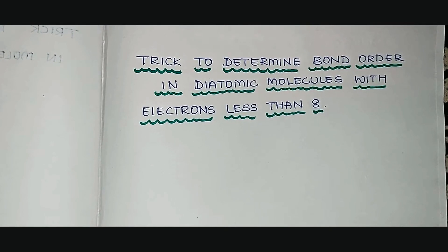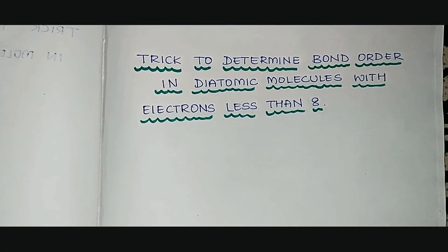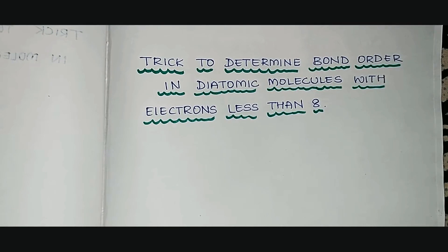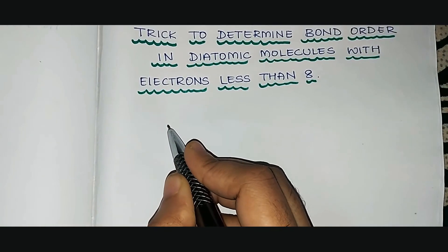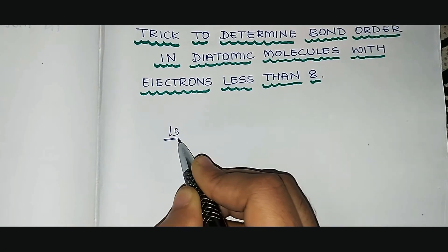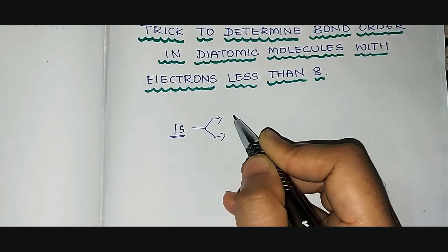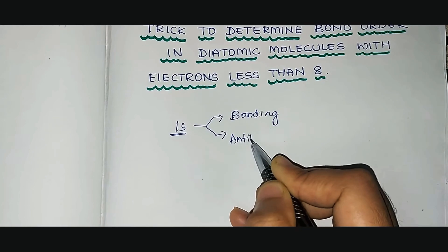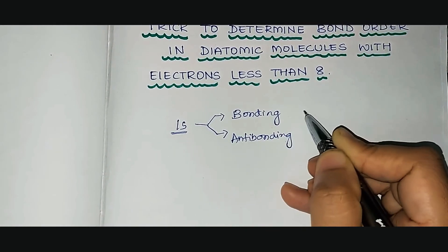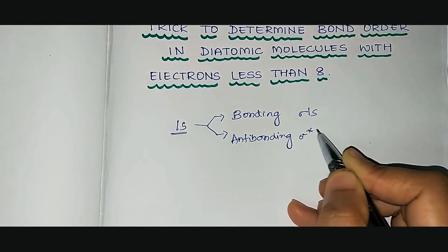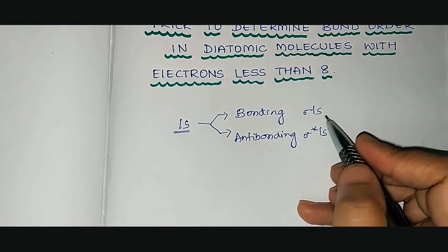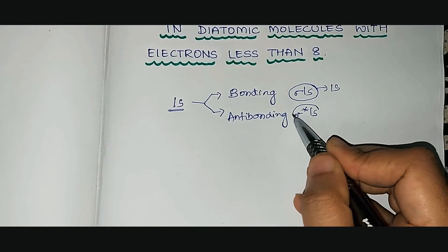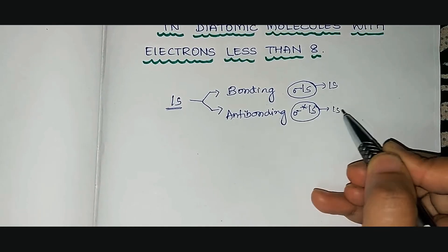Before understanding the trick, you need to know that according to molecular orbital theory, it consists of bonding molecular orbital and antibonding molecular orbital. For example, if you consider a molecule with a 1s orbital, it will have two molecular orbitals — one bonding molecular orbital and one antibonding molecular orbital, represented as sigma 1s and sigma star 1s. Always remember that the energy of the bonding molecular orbital is lower than the 1s orbital, and the energy of the antibonding molecular orbital is greater than the 1s orbital.